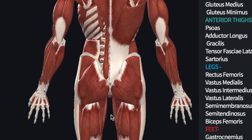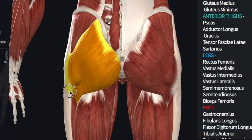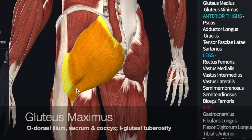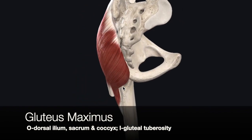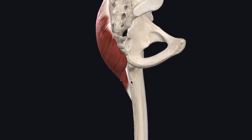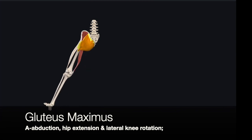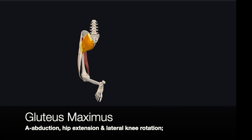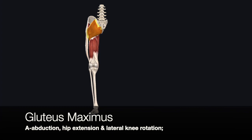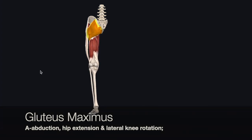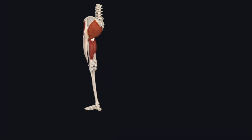Next we'll look at the gluteal muscles, which activate the posterior thigh. Just like the abdominal muscles, they are in layers, so we'll begin with the outermost layer first. The first muscle is the gluteus maximus. Its origin is on the dorsal ilium, sacrum, and coccyx, and its insertion is on the gluteal tuberosity of the femur. Its action includes abduction of the leg, lateral rotation when the knee is bent, and extension of the leg or hip in a posterior direction. When combined, these three actions make the gluteus maximus a powerful muscle for climbing or jumping.